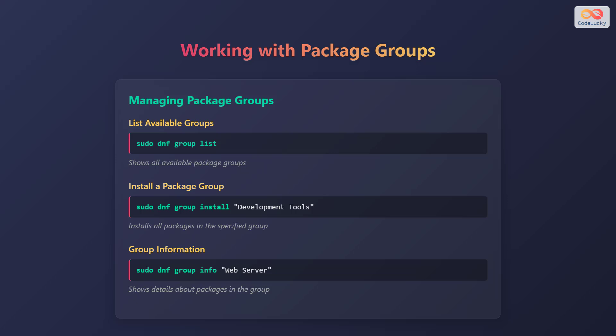For detailed information about a package group, use the command sudo dnf group info followed by the group name in quotes, such as web server. This command shows details about the packages included in that group.